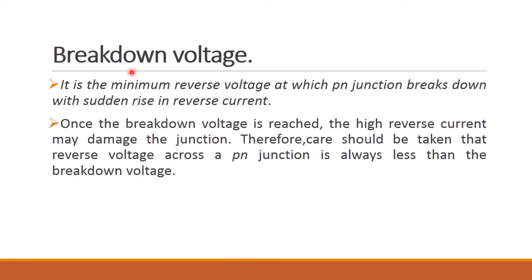Next, let us see what is breakdown voltage. Breakdown voltage means under reverse bias condition, we have to apply a small reverse voltage at the P-N junction so that the junction breaks down and this gives rise to the reverse current. This voltage is called breakdown voltage.